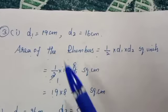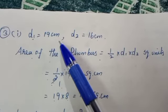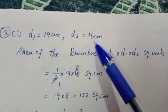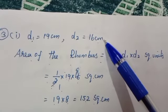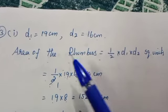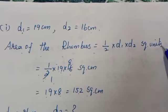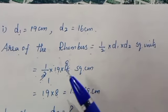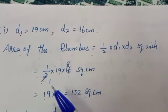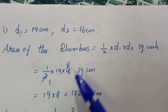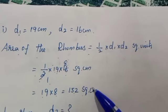Third problem, first question: D1 is equal to 19 centimeter, D2 equals 16 centimeter. Area of the rhombus equals half into D1 into D2. That is half into 19 into 16. Cancelling: 2 goes into 16 giving 8, so 19 into 8 equals 152 square centimeter.